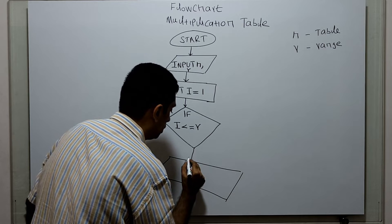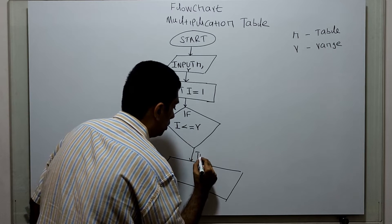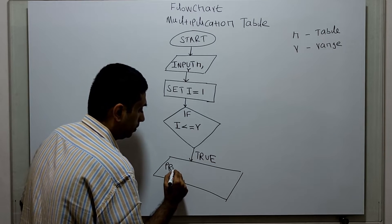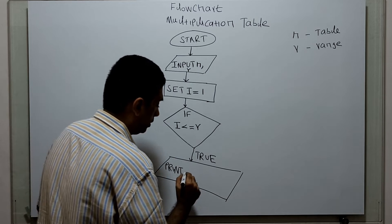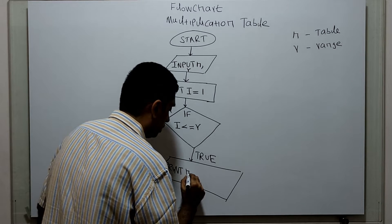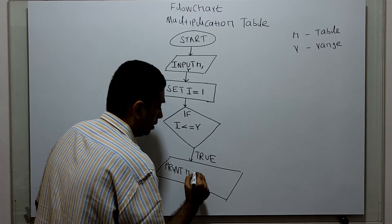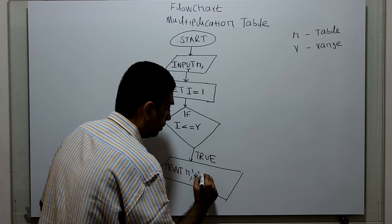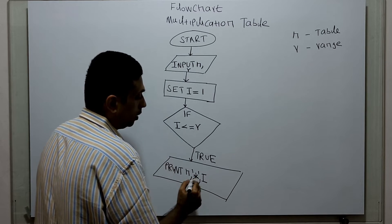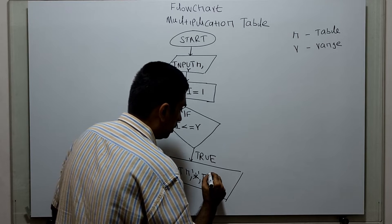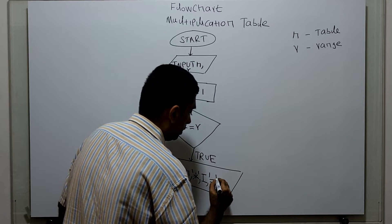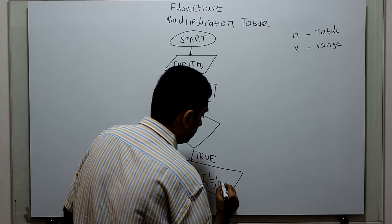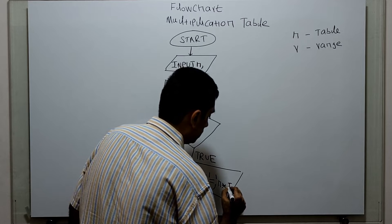If the condition is true, I am printing the variable n followed by the asterisk symbol — this is a string — followed by i, the value of the variable i, followed by the equal to symbol, followed by n multiplied with i.